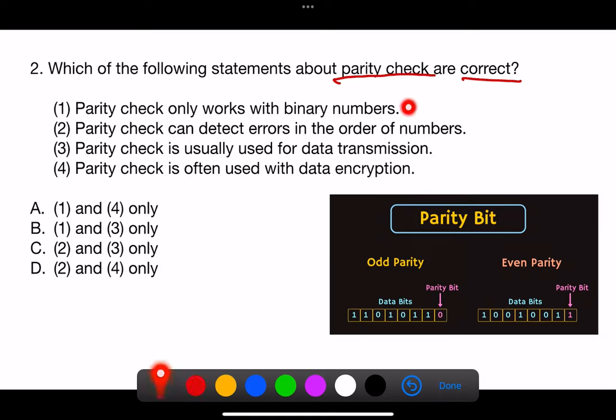1. Parity check only works with binary numbers. 2. Parity check can detect errors in the order of numbers. 3. Parity check is usually used for data transmission. 4. Parity check is often used with data encryption.